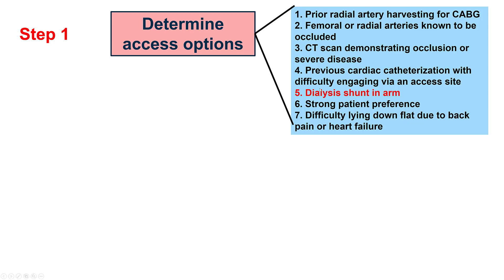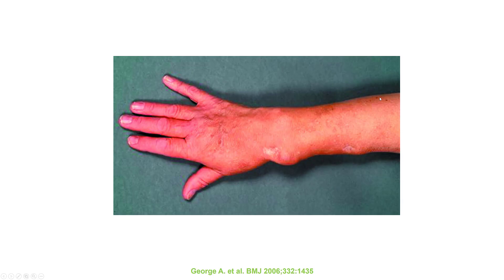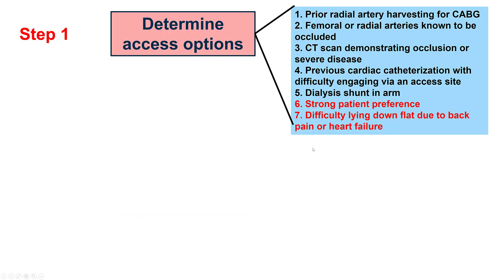Another possibility is a dialysis shunt in the arm. In dialysis patients, the shunt should be identified and radial access should not be performed in that arm. Finally, some patients have a strong preference for femoral or radial, or have difficulty lying flat — for example, those with back pain, orthopedic problems, or heart failure. In such patients, radial access is preferred because it allows them to sit up immediately after the procedure.